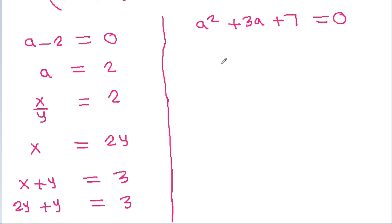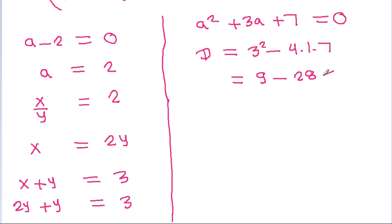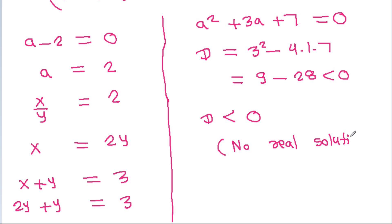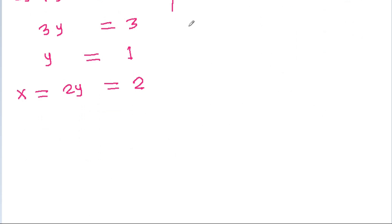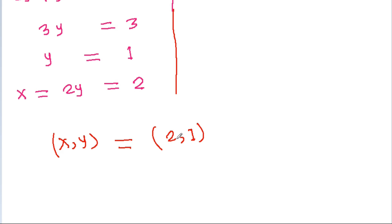For the quadratic factor, the discriminant d = 3² - 4(1)(7) = 9 - 28, which is negative. So d is negative, meaning it has no real solution. Therefore, the real values are x = 2 and y = 1.